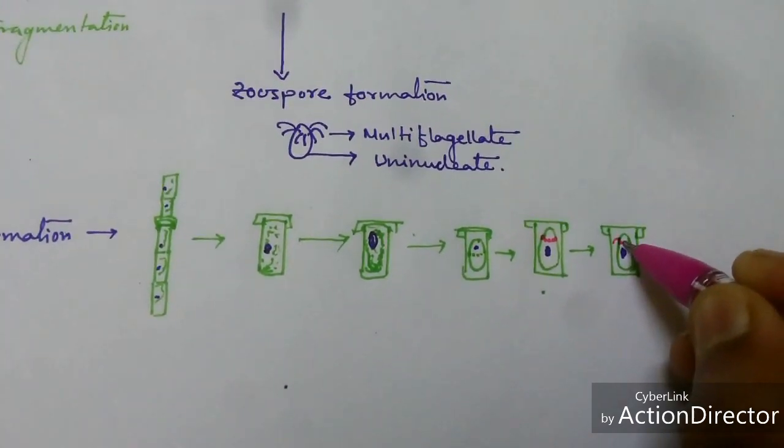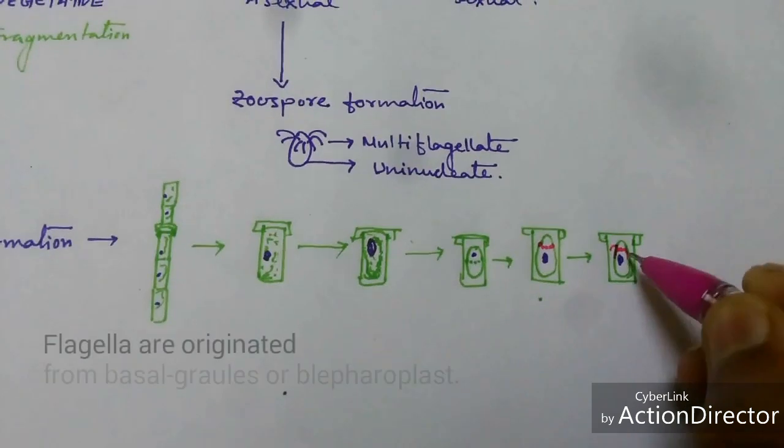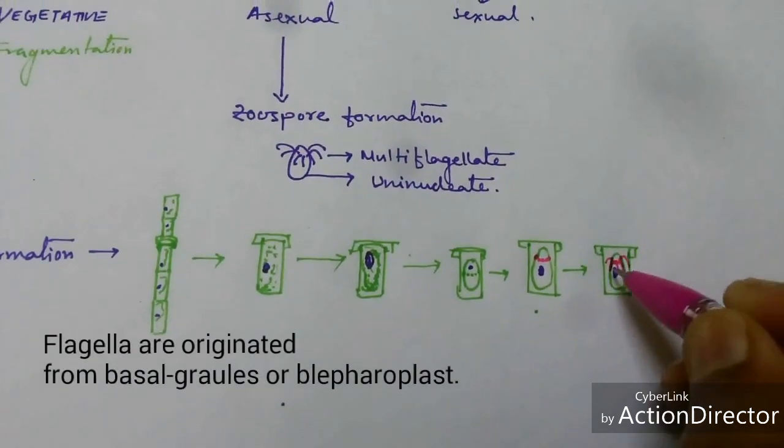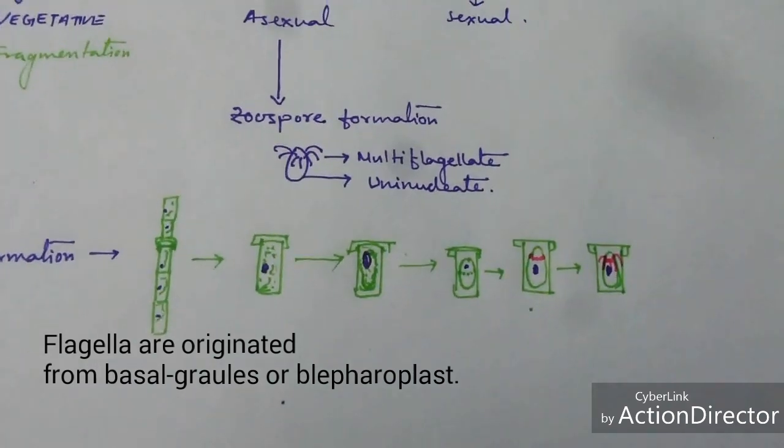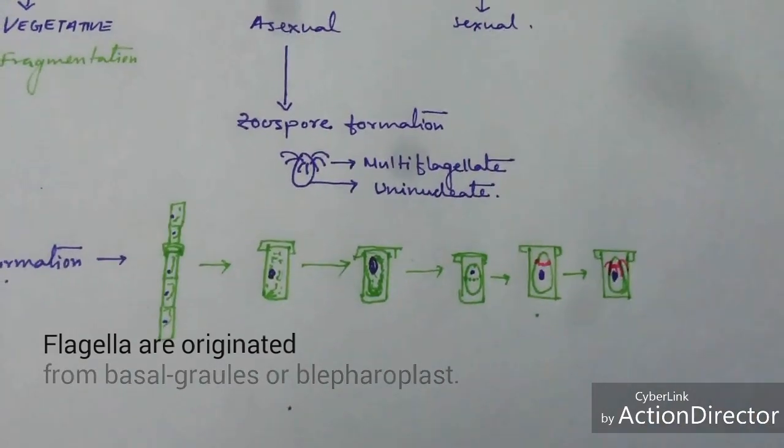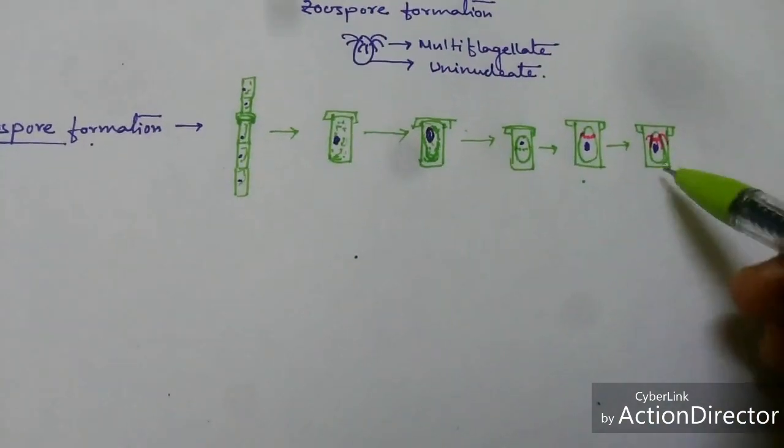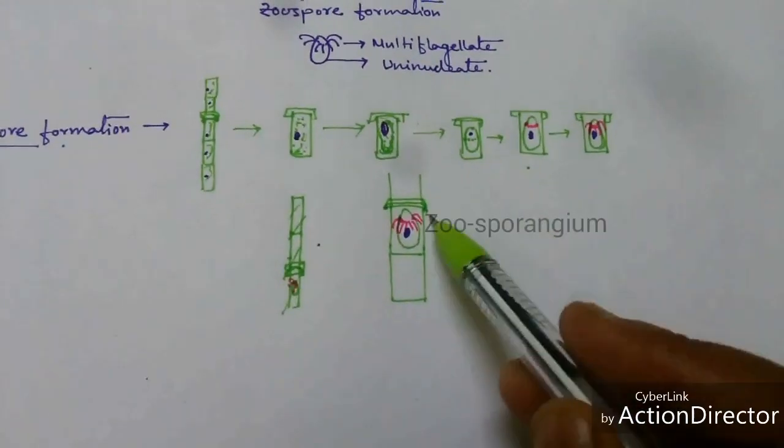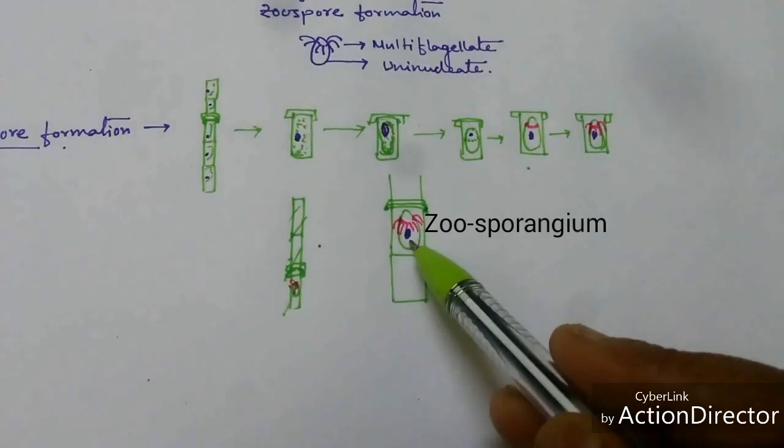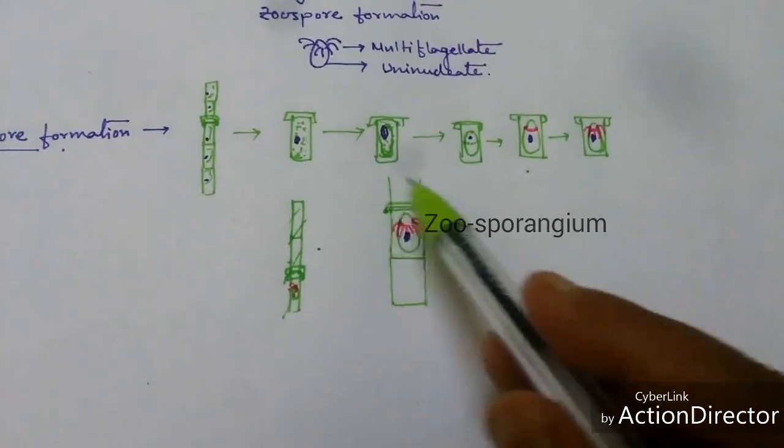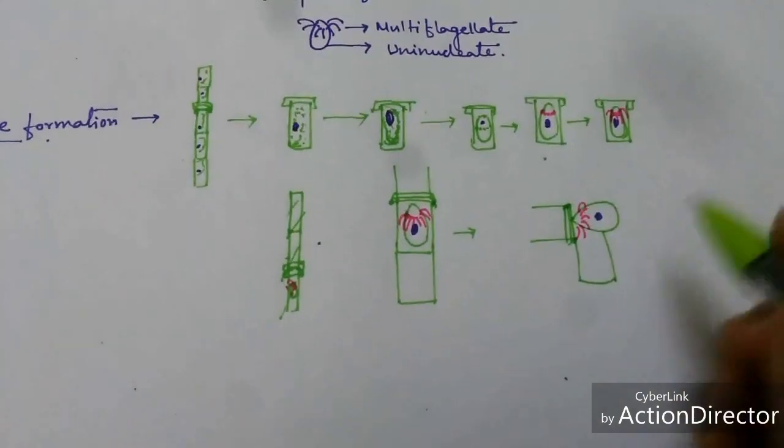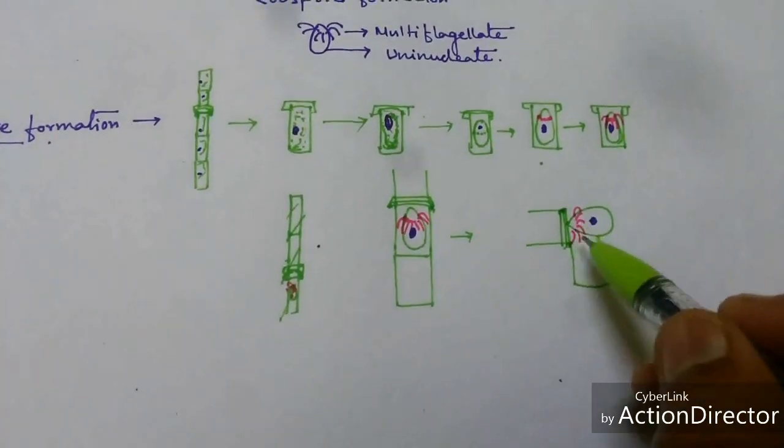So flagella are formed - numerous flagella are formed from this blepharoplast region. After formation of zoospore, the capsule helps to remove it from the thallus. By the breaking of apical cap, the zoospores are removed.